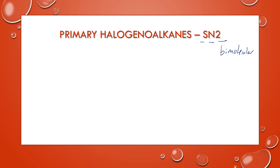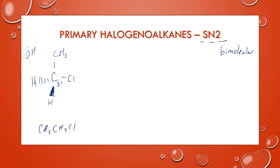Let's start out with a very simple primary haloalkane. Let's say I have ethane with a chlorine, and I'm going to draw it using our wedge and dash notation to show the stereochemistry. The generic structure would be CH3CH2Cl, but this is showing that tetrahedral structure around the carbon attached to the chlorine. That carbon is our slightly positive carbon. The nucleophile can come in with those extra electrons, attracted to that positively charged carbon, and so those two things have to collide — that's where the bimolecular part comes in.